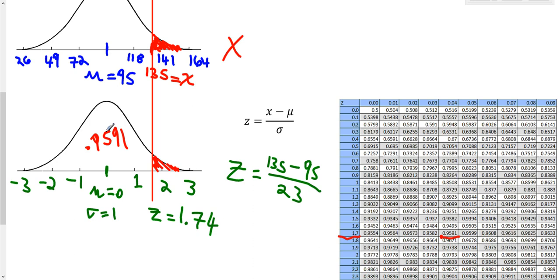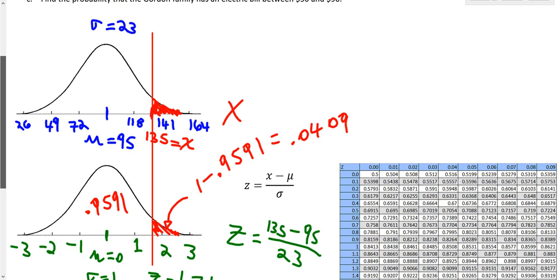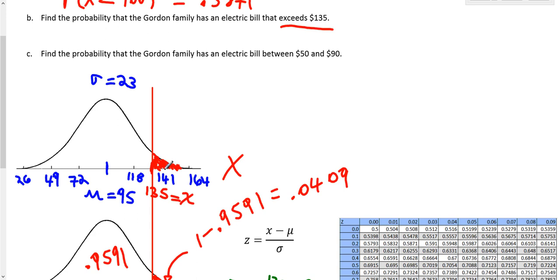But that's not what I need. The table only gives me the area to the left, but I need the area to the right. I need this area right here. That area then is going to be 1 minus .9591. So that area is .0409. Which means for my particular problem, right here, this area to the right here is the same. This area is .0409.